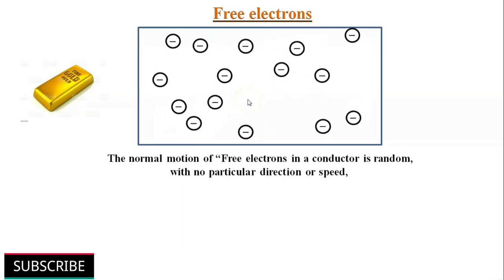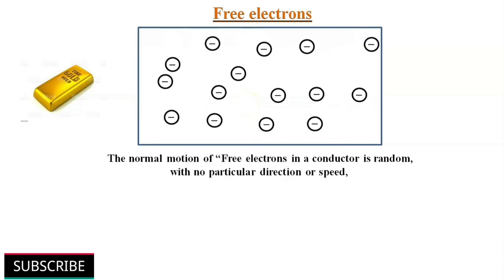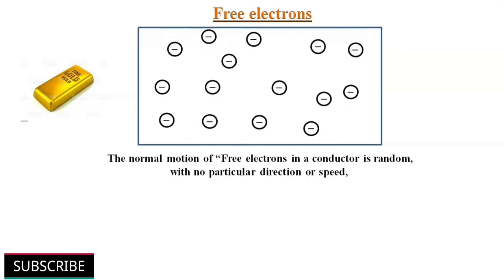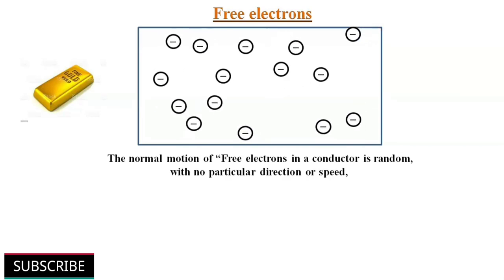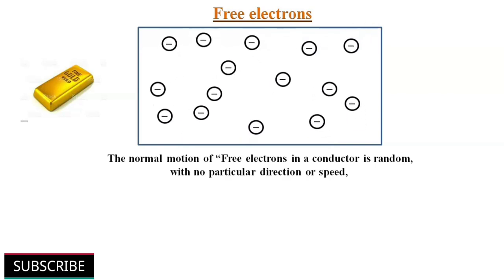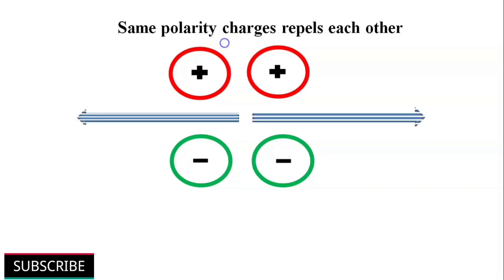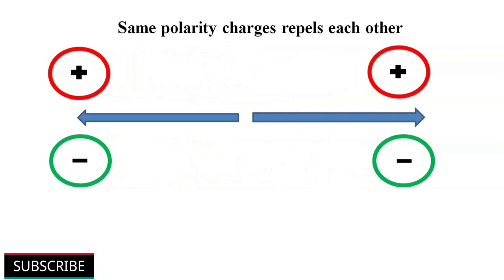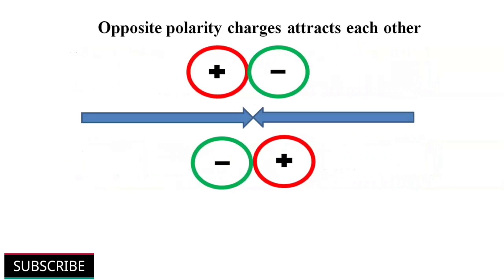While the normal motion of free electrons in a conductor is random, with no particular direction or speed, if we influence these free electrons to move in a uniform direction, then that uniform motion of electrons is what we call electric current. This can be achieved by using the simple concept of charge. As we know, same polarity charges repulse or move away from each other, and opposite polarity charges attract each other.